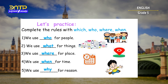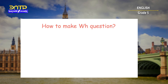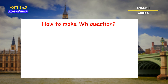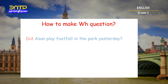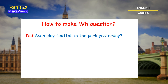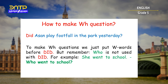So, children, you must keep in mind these words. Let's have a look at when we use them. Now we will make WH questions. Here we have a general question in the past: 'Did a son play football in the park yesterday?' To make a WH question, we just put the five W words before 'did'. But remember, 'who' is not used with 'did'.